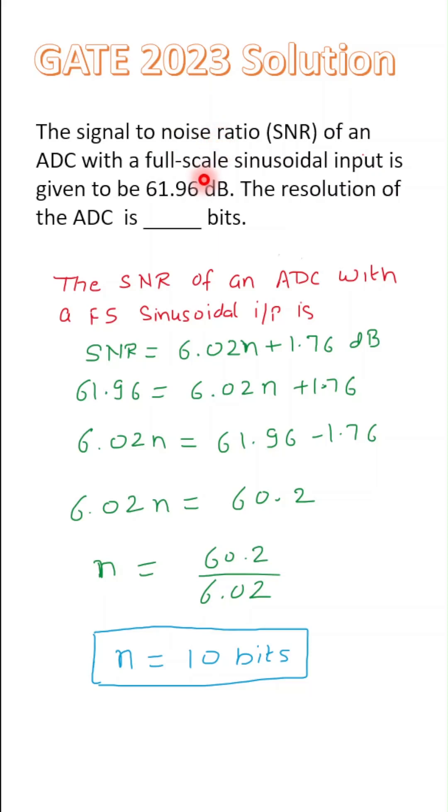In this question, we have been given the signal to noise ratio, i.e., the ratio of signal power to the noise power, and the value of this SNR is 61.96 dB.